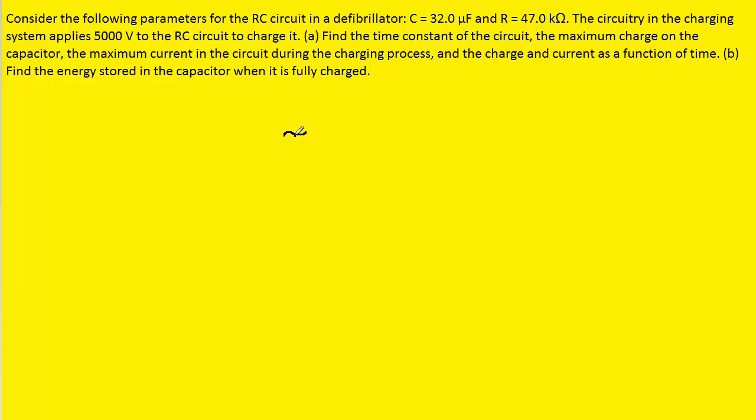The time constant for an RC circuit is simply equal to the resistance multiplied by the capacitance. Now, the resistance was given to us as 47.0 kiloohms. Notice that we're going to have to convert that into the standard unit of ohms by multiplying by 10 to the power of 3. That would put the unit in ohms.